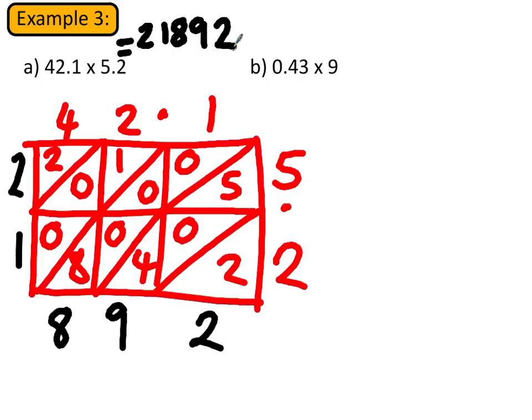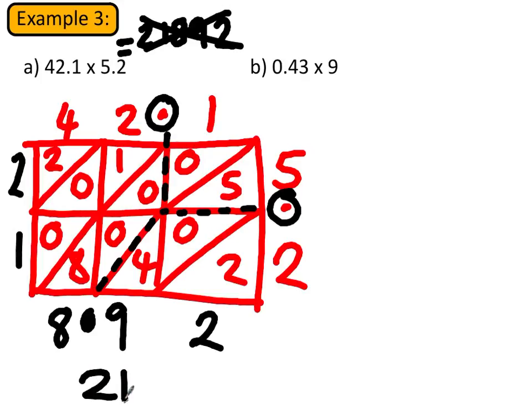Now if we look at the decimal places, we can see one of them is here and one of them is here. And what we do is we go down from one and across from the other until they meet. And where they meet we follow the diagonal line, and that's where the decimal place goes, right there. So the answer is actually in fact 218.92. So we cross out that, that was definitely wrong. We've got our answer, 218.92.